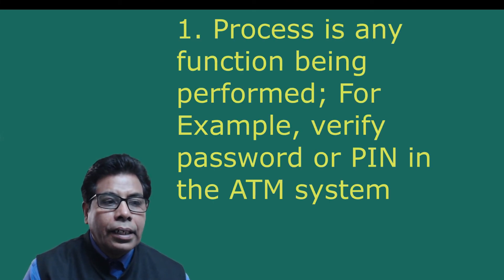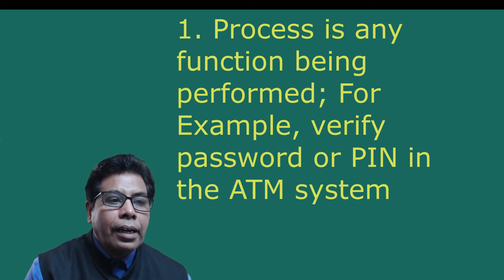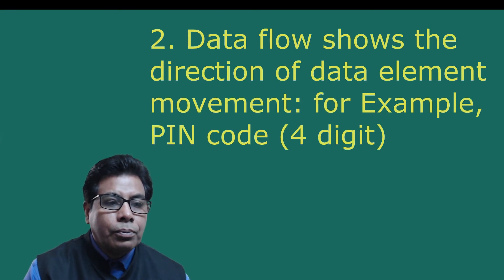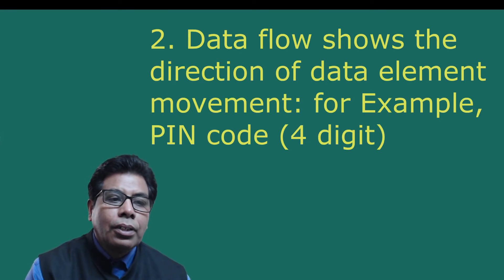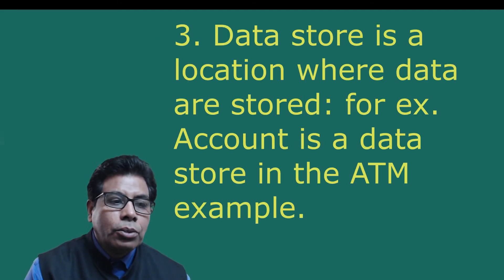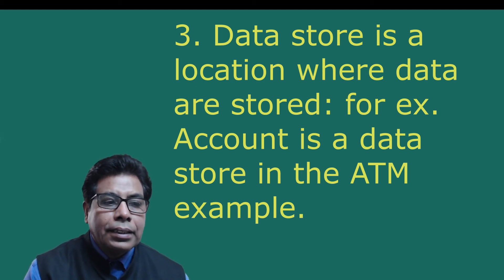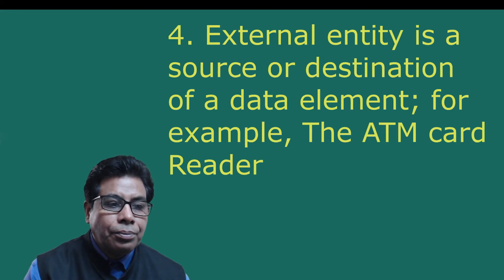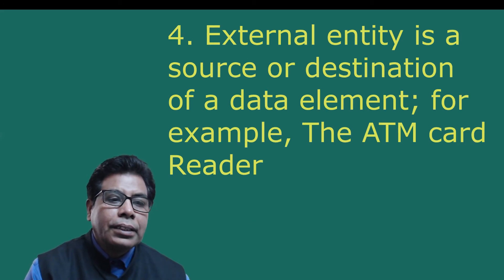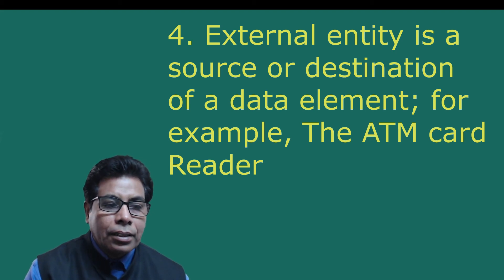DFD uses four primary symbols. First is process — any function being performed, for example verifying a password or PIN in the ATM system, represented with an ellipse. Second is data flow — shows the direction of data element movement, for example the ATM PIN (four digits). Third is data store — a location where data are stored, for example an account in the ATM example, represented with two lines. Fourth is external entity — a source or destination of data, for example the ATM card reader.